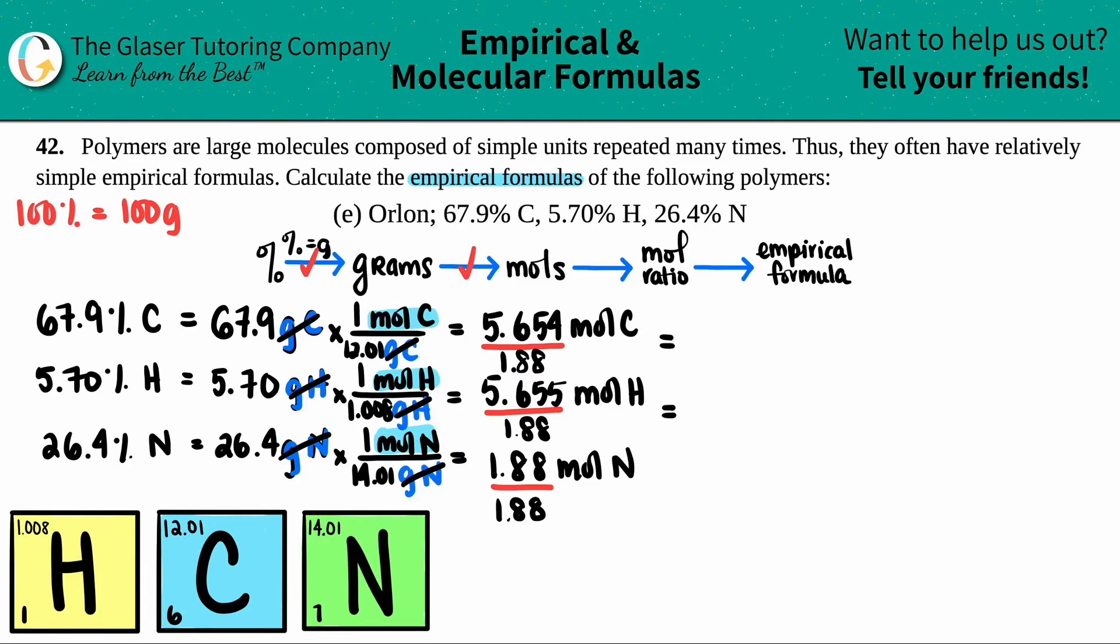Now let's see what this answer is. So 5.654 divided by 1.88. At this stage of the game, you should get very, very close to a whole number. And we do. We get 3.007. But it's very, very close to three. So I can say three moles of carbon. 5.655 divided by 1.88, I get the same idea here. So I have three moles of hydrogen. And then 1.88 divided by 1.88 is just one. And that mole ratio is done.